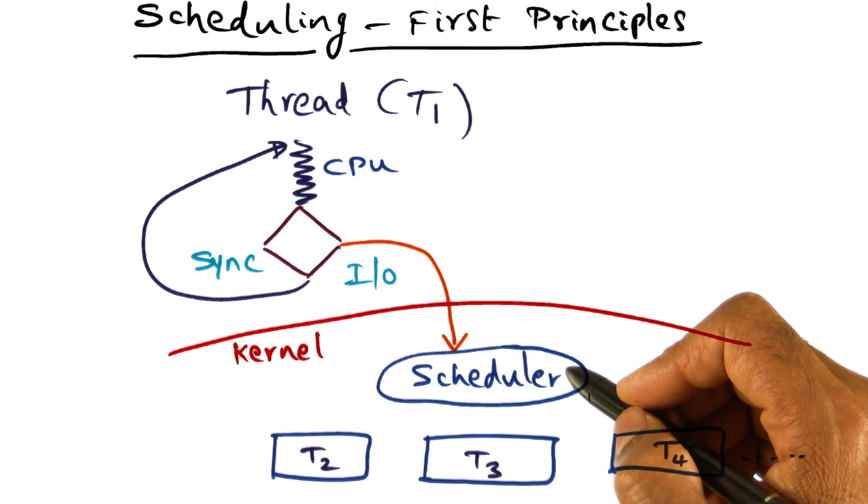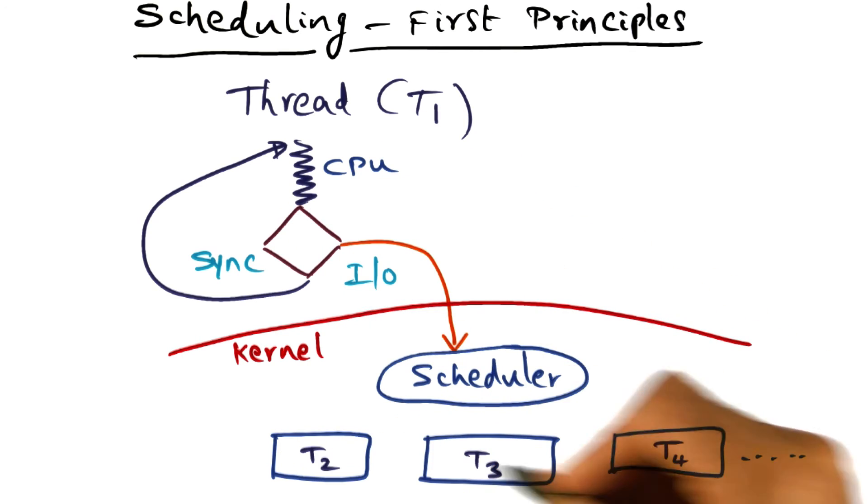So how should the scheduler go about picking the next thread or a process to run on the processor, given that it has a choice of other threads that it can run at any point of time?